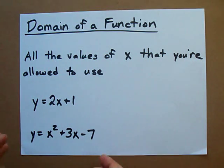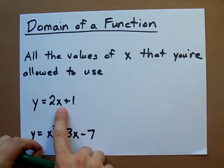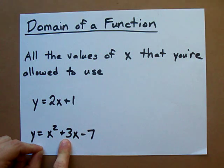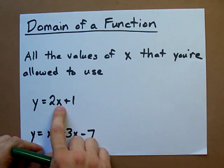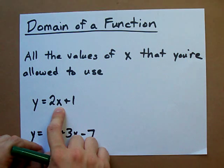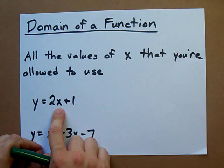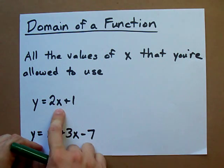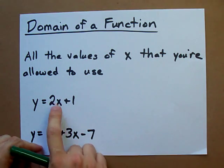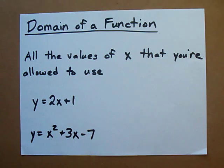Two functions that you're familiar with are the line and the parabola. What you'll remember from a line is that you can plug any number you want in for X. There's no number in here that you can't use. Negative seven, point one, a billion, doesn't matter. Anything you want you can plug it in there.